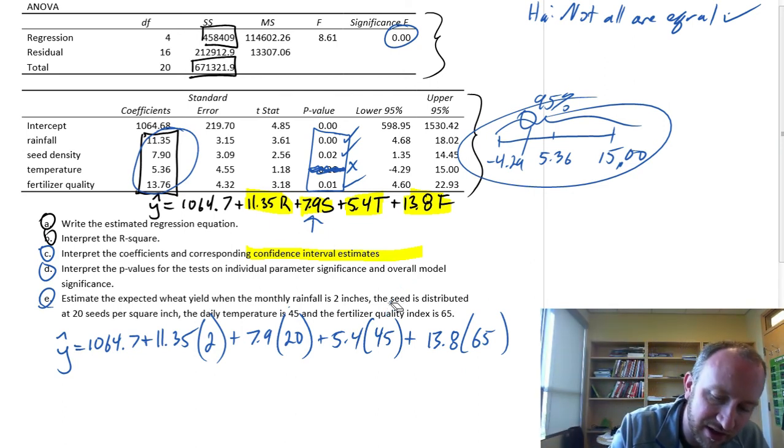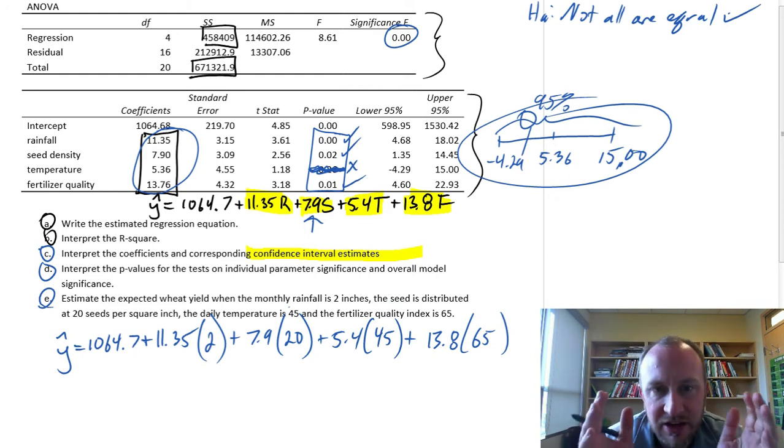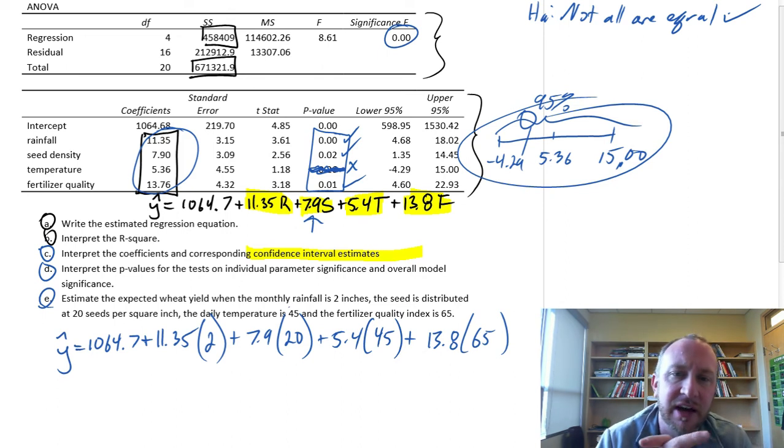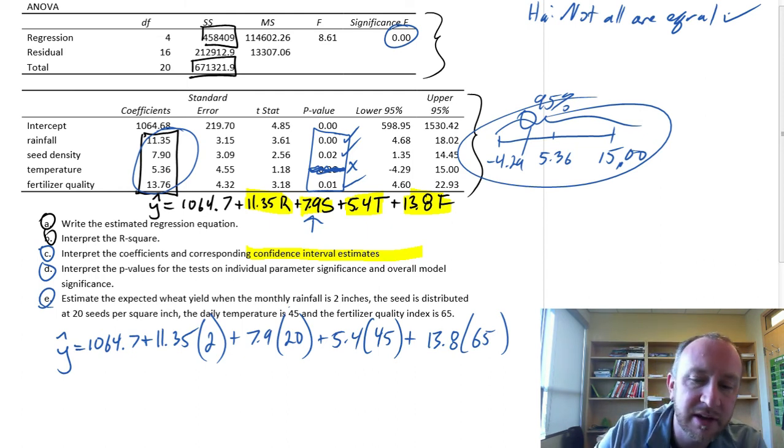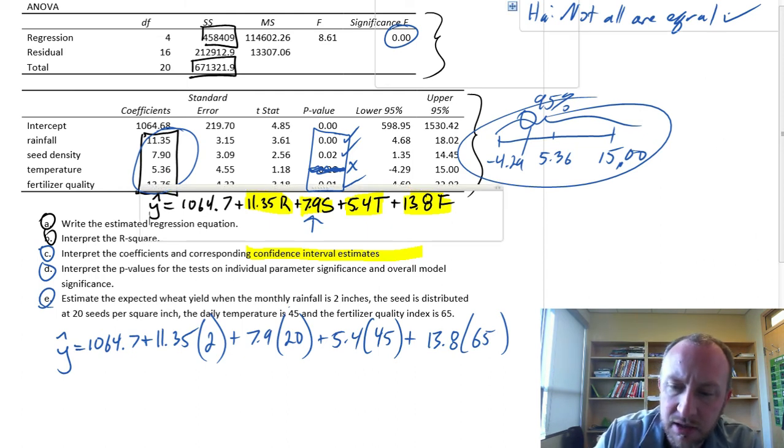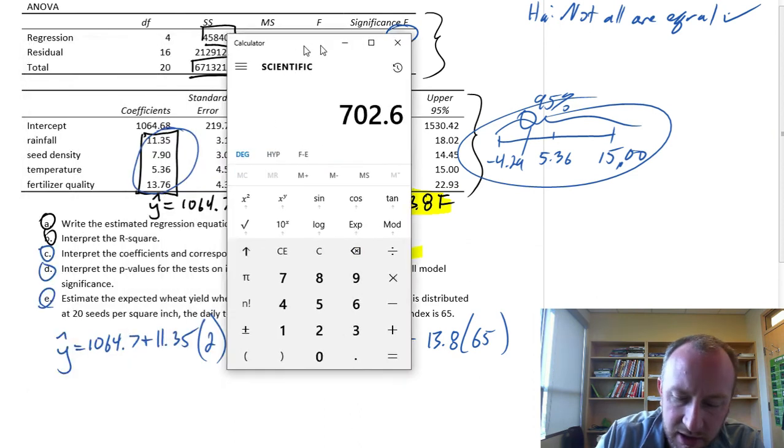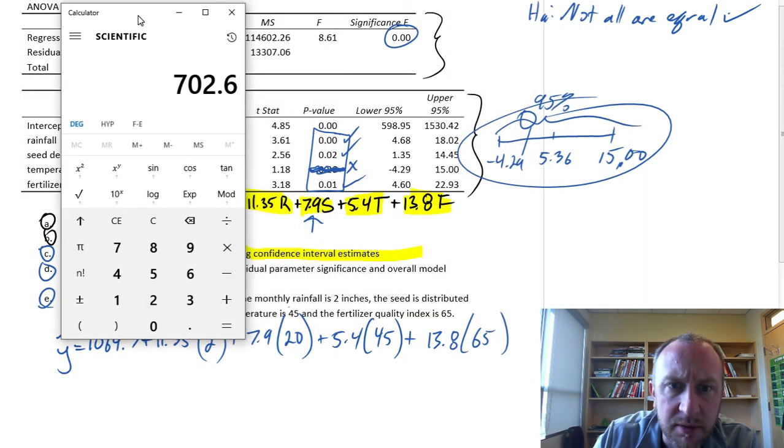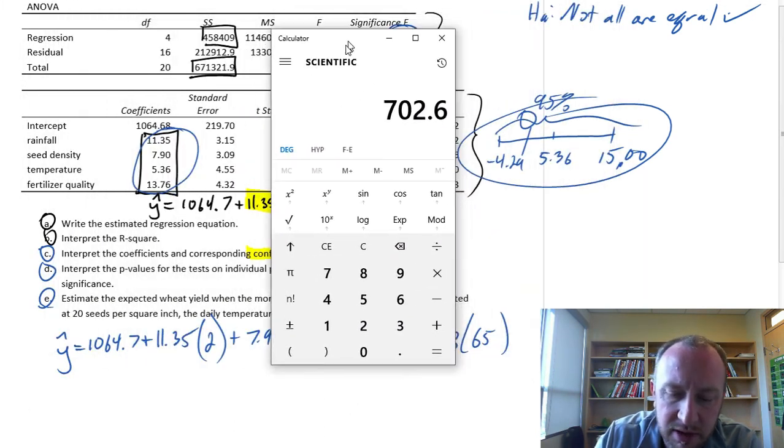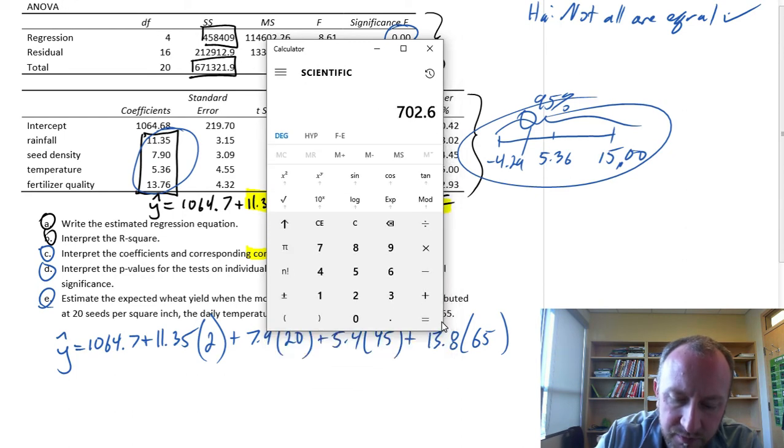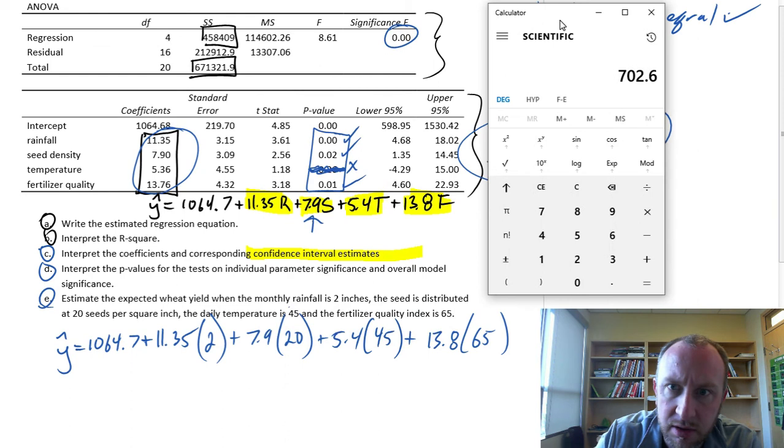We would actually go and rerun the regression. We'd eliminate that piece of information from our sample and we'd redo the estimation. And we would get new estimates of those coefficients with temperature out of the model. But without having all of this done, just working with what we have here. This is just an algebraic exercise to use the model for estimation purposes. So here I've got all of my values for the independent variables in there.